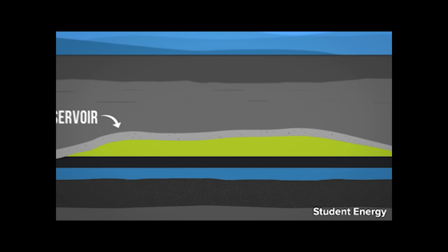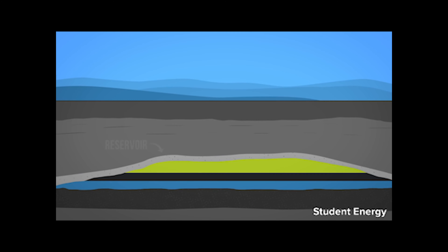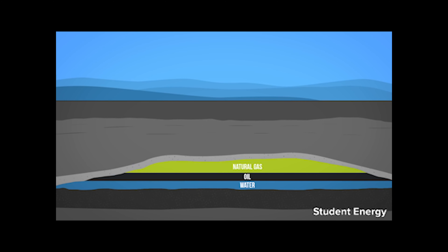Once the oil and natural gas is formed, it migrates through the pores in the rock until it gets trapped under impermeable rock units. These locations, known as oil reservoirs, are where we find oil today.